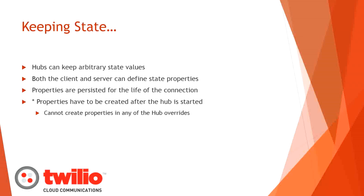State: hubs can keep arbitrary state values, and they are persisted for the life of the connection, which can be really handy. Both the client and the server can define arbitrary state properties. One caveat: properties have to be created after the hub starts. My original thought was to use the OnConnected override to create state properties, but there's a bug in SignalR where you can't create state properties that early — you have to do it after that point.